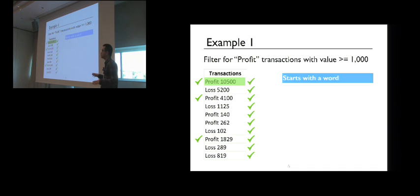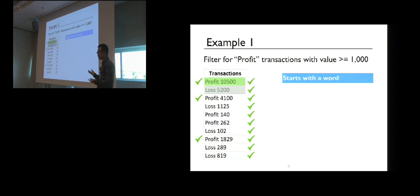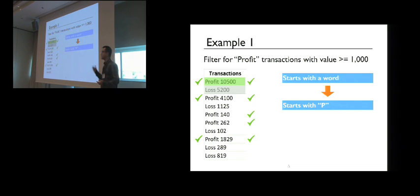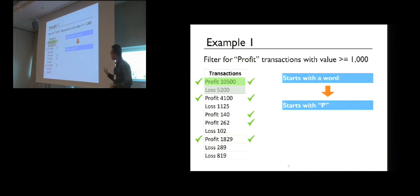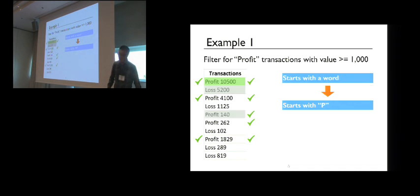This initial program is not correct because it matches everything in the column. So the user picks another example — the second string — which is a negative example, since the user doesn't want it in the output. Our system takes this additional example and learns a program consistent with all previous examples. However, this program is still not completely correct because one more string matches but shouldn't.